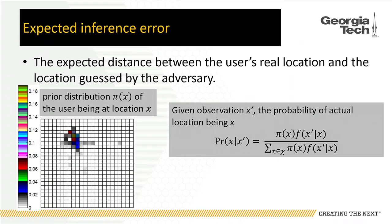For expected inference error, it assumes the adversary has some prior knowledge about the user's real locations, represented by a prior distribution. After observing a fake location reported by the user, the adversary can get a posterior distribution over the whole location dataset and use that to estimate the user's location. Expected inference error measures location privacy by the expected distance between the user's real location and the location guessed by the adversary.